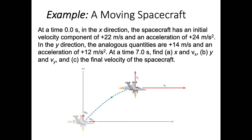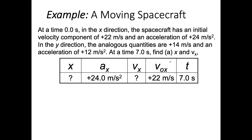Let's use an example to understand the independence of x and y motion. At t equals 0, we have a spacecraft at the origin. It has initial velocity in x of 22, acceleration in x of 24, initial velocity in y of 14, and acceleration in y of 12. We want to find x, vx, y, and vy of the spacecraft, and then find the total velocity. Since x and y directions are independent, we treat them separately.